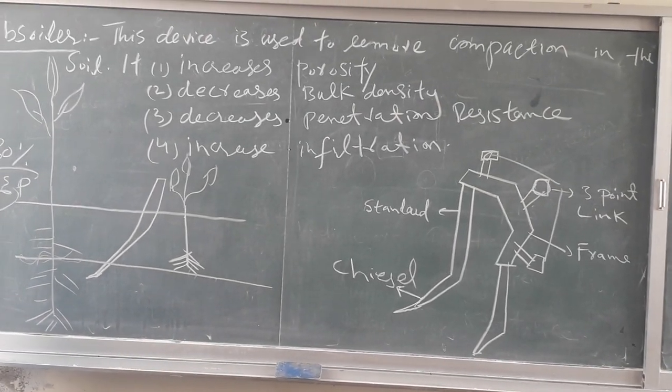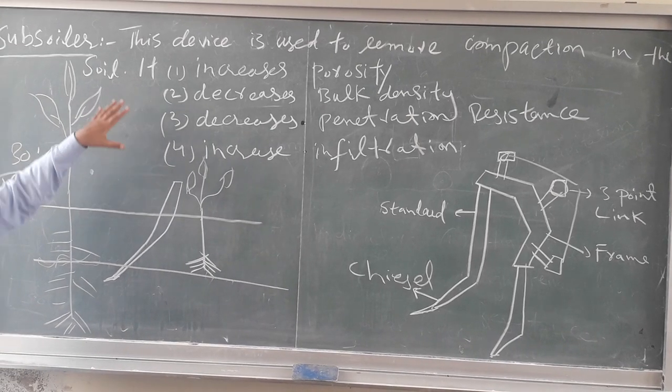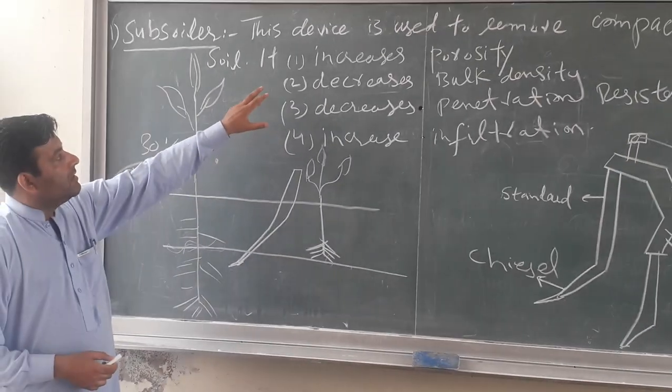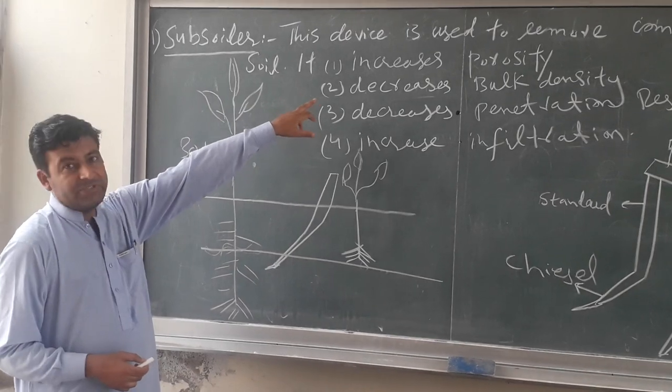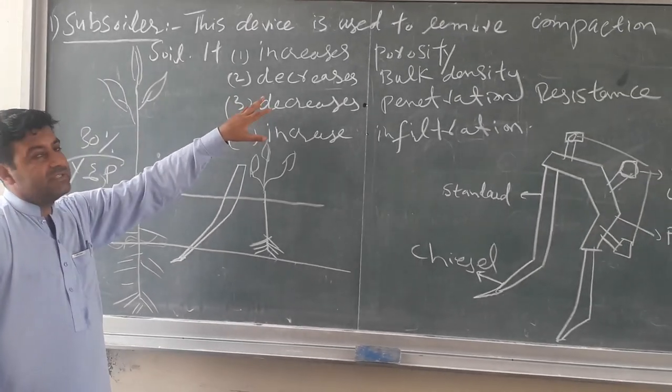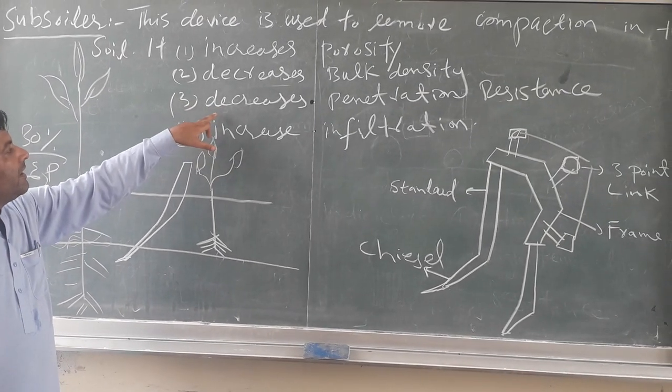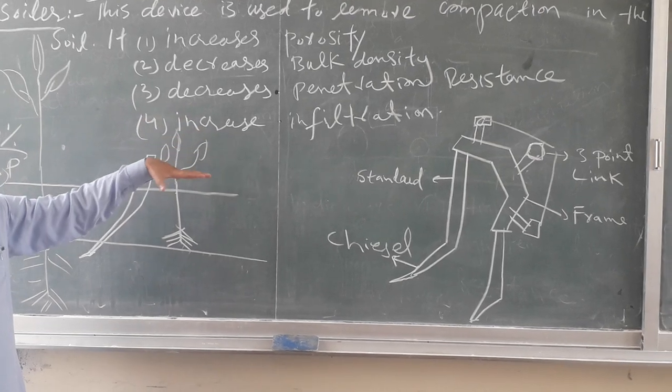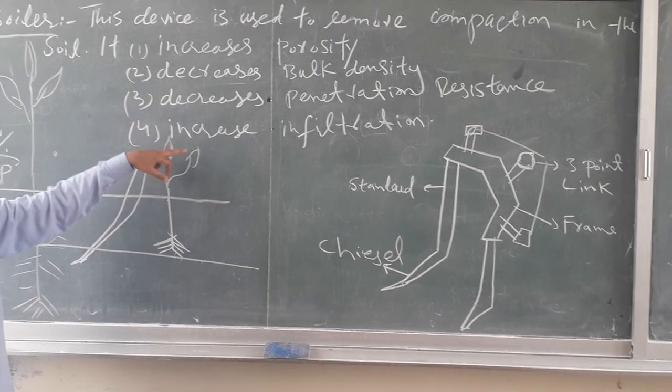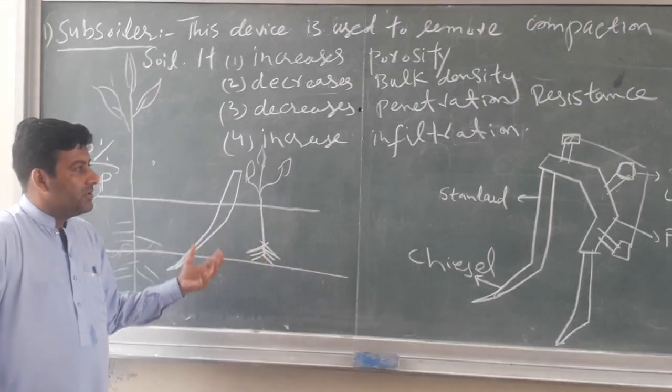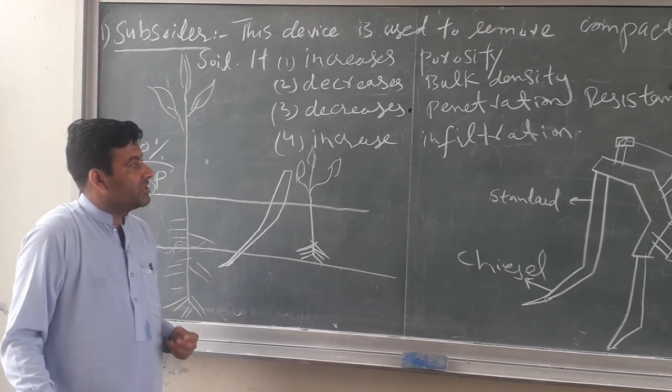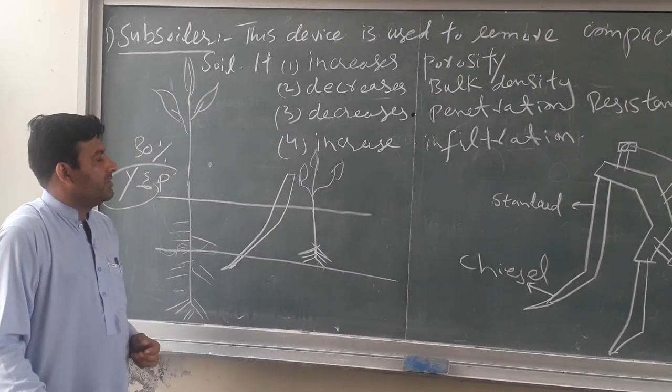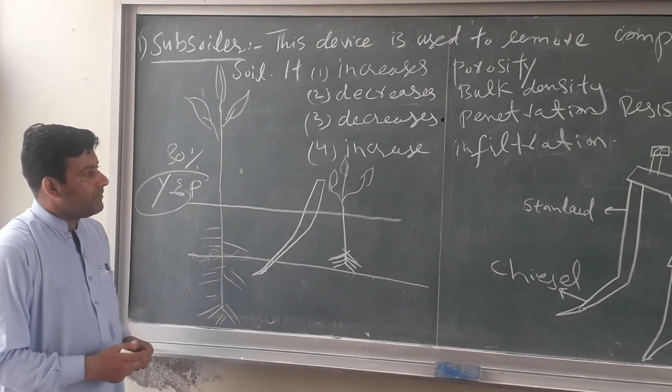What does it do? This device is used to remove compaction in the soil, and after the use of this device, soil porosity is increased, bulk density decreases, soil penetration resistance decreases, and soil infiltration rate increases.